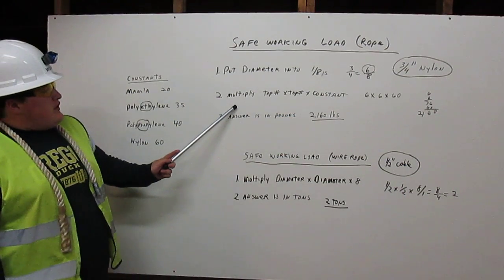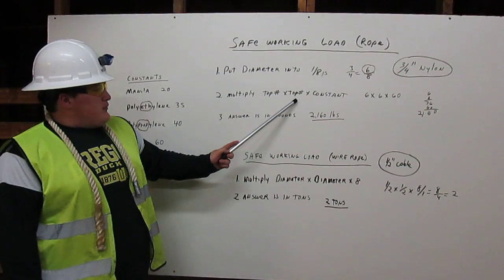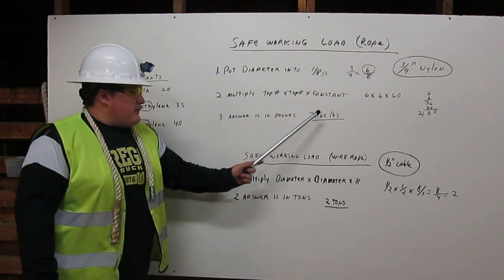Second, we multiply the top number, which is six, by the top number by the constant. Let me explain constant.